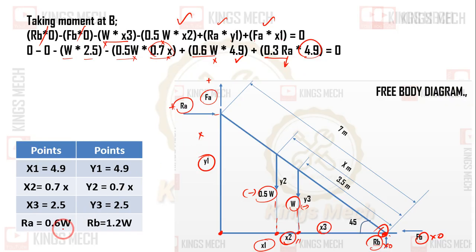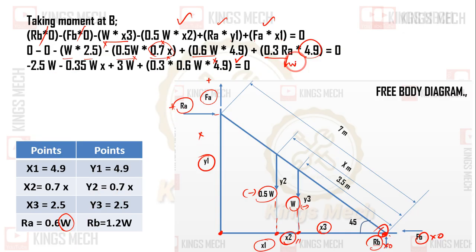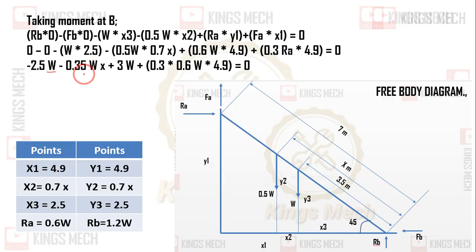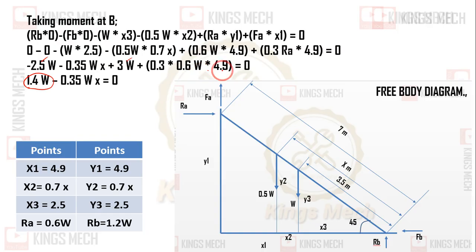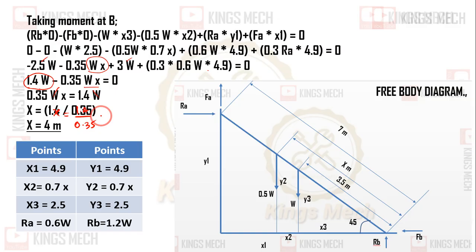Substituting all values: 2.5W minus 0.35Wx minus 3W plus 0.3 times 0.6W times 4.9. Collecting all W terms: 1.4W equals 0.35Wx. The W's cancel, giving x equals 1.4 divided by 0.35.